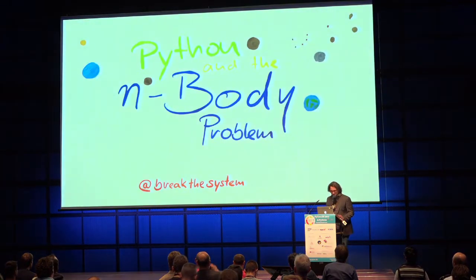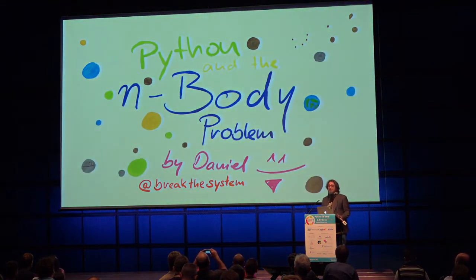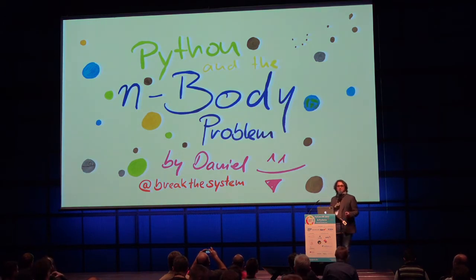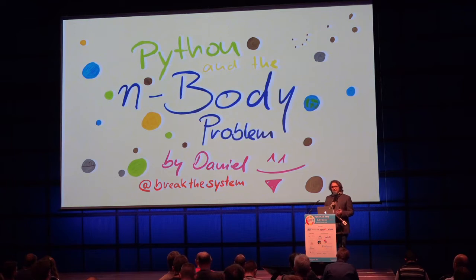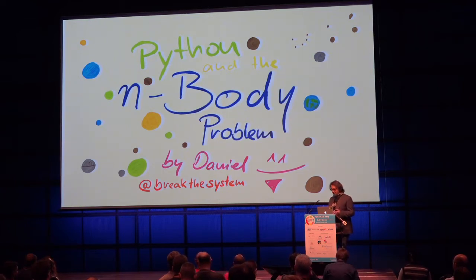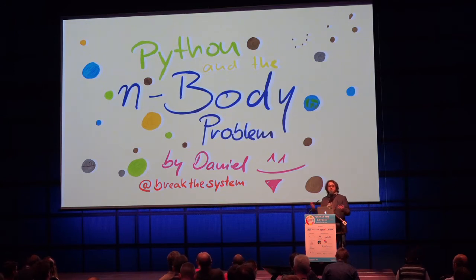Hi. Welcome to Python and the n-body problem. My name is Daniel, and I'm really happy to see you all here tonight. We'll be talking about celestial mechanics today. Celestial mechanics is the science of calculating and predicting the path that the sun, the moon, the planets, galaxies, and everything in between take across the sky.